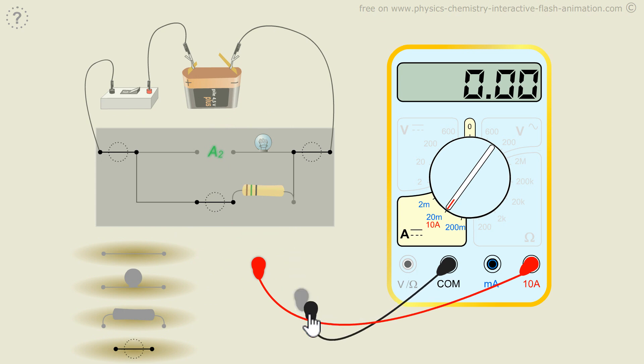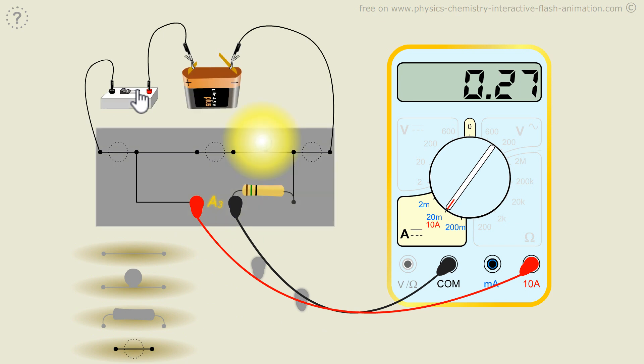And finally I measure the other branch current, the one that passes through the resistance. And I find I3 equals 0.27 amps.